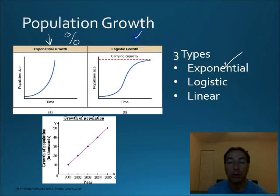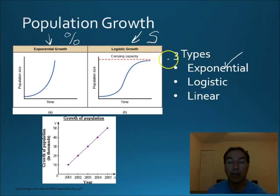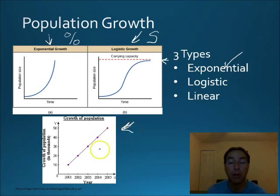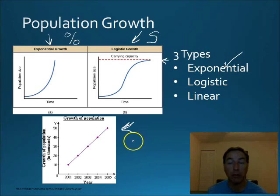The next type is logistic growth, which produces an S-curve. Logistic growth shows exponential growth in the beginning, but then as the population reaches carrying capacity, it levels off. Carrying capacity is the maximum number of organisms of that species that the ecosystem can support. Certain resources run out or become limited, and the population reaches carrying capacity. The third type is linear growth — a set amount of growth every time, like 10,000 people added per year, producing a straight line. Linear growth is very rarely seen in biological populations.